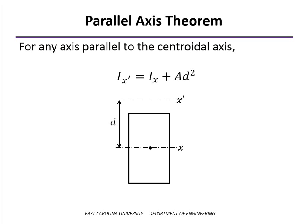To find the moment of inertia about the axis labeled x prime, we would take the 1/12 bh³ and add to that the area of the rectangle times d squared, where d is the distance between the two axes.